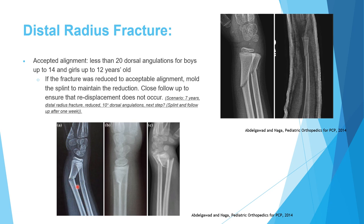You can get greenstick fractures, which are angulated but not bent. You can get a completely displaced fracture. You can see torus fracture. The fractures can also be metaphyseal or through the growth plate as we'll see after that. All these types fall into the category of distal radius fracture.